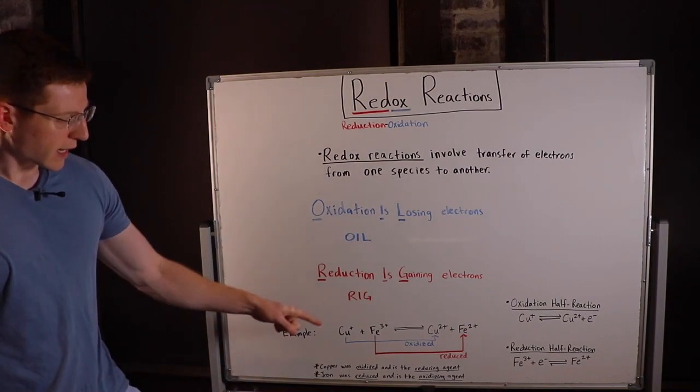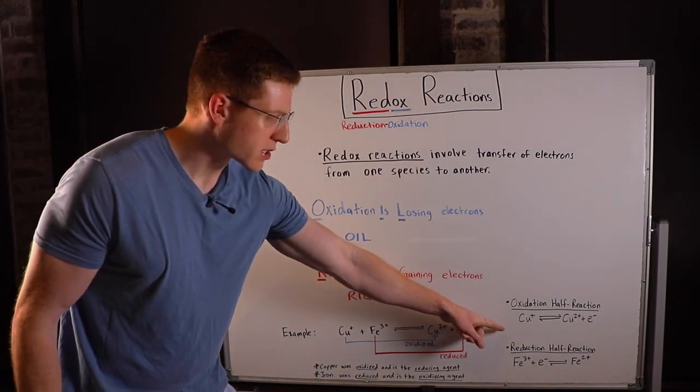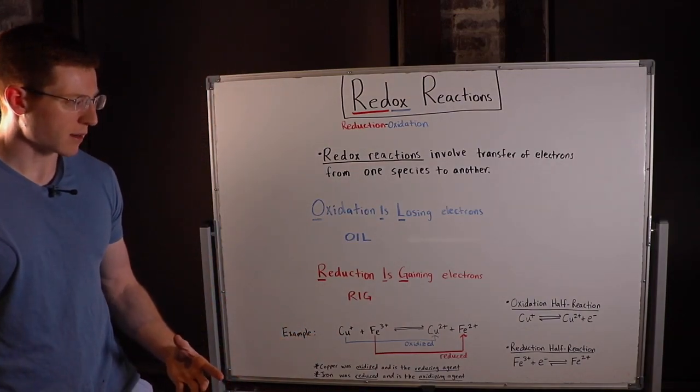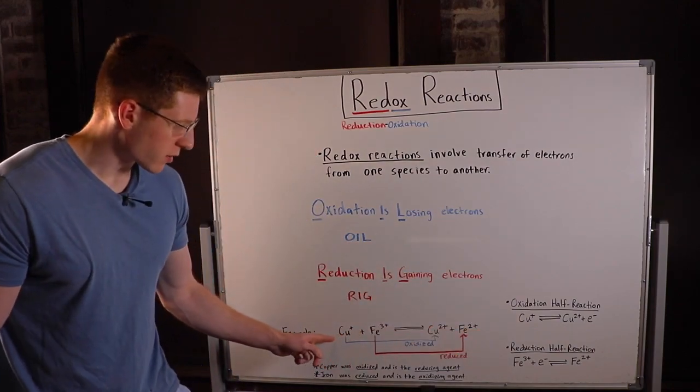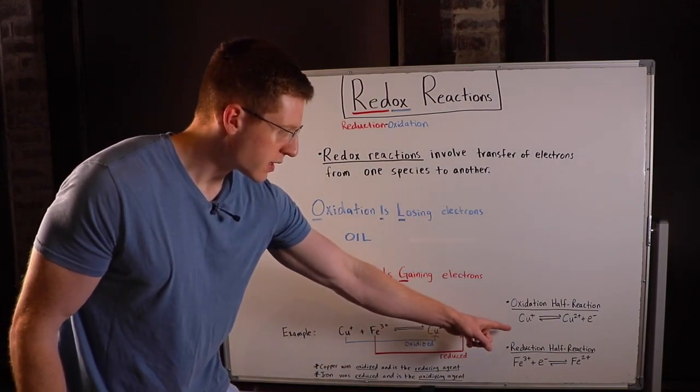In this case, we can write half reactions to better understand what's really happening here. For the copper, what really happened was it lost an electron. Its charge went up by one.